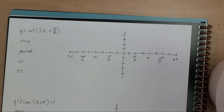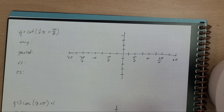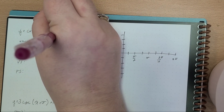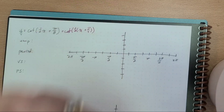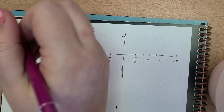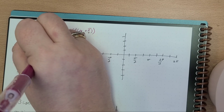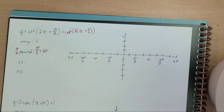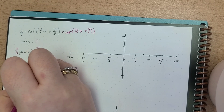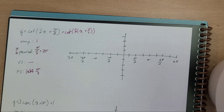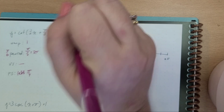Here we have y equals the cotangent of (½x + π/4). So our amplitude is 1, our period is π over ½, which is just 2π — remember our period is π over b for tangent and cotangent. Vertical shift we have none, and phase shift we have left π/4.